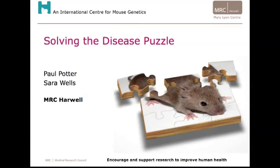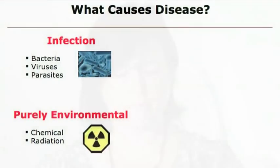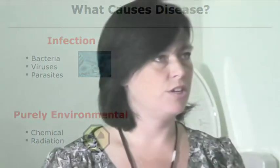By tackling diseases, you have to tackle the causes of diseases first. There are many different causes of diseases, and many of these are spanned by different units of the MRC. Infection — if you get an infectious disease like a cold, the flu, viruses, parasites — this will cause disease and you'll get poorly. There are purely environmental chemicals if you get poisoned, radiation damage, a purely chemical and environmental aspect to disease.